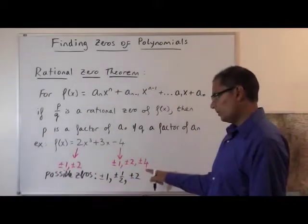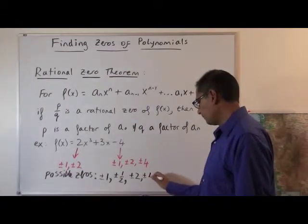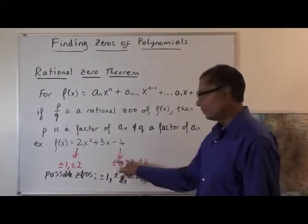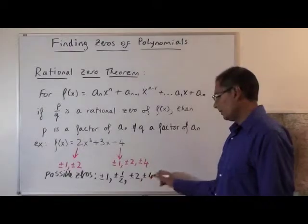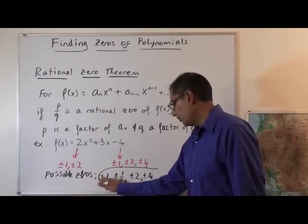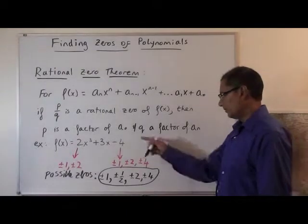Then we go to 4. Plus or minus 4 over 1 is going to be plus or minus 4. And then 4 over 2 is going to give me 2, but I already have plus or minus 2 here. So these are my possible zeros for this function.